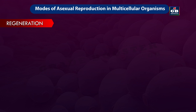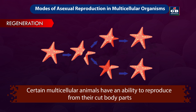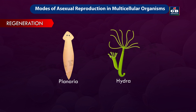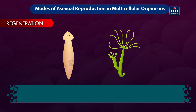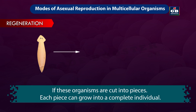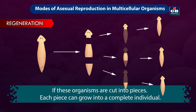Regeneration: Certain multicellular animals have an ability to reproduce from their cut body parts, for example planaria and hydra. If these organisms are cut into pieces, each piece can grow into a complete individual. This is called regeneration.